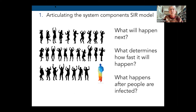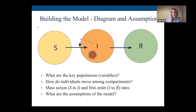We want students to envision the system — draw a picture. There's a population, one person is sick. What will happen next? What determines how fast it will happen? What happens after more people are infected? As Ann said, we spend a lot of time having students develop the model: thinking about key populations as variables, how individuals move among populations, always starting by drawing a diagram and labeling the arrows, then thinking about how to formulate those arrows into mathematical expressions using mass action and first-order rates.